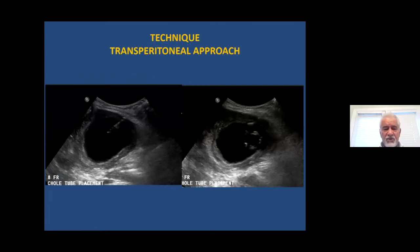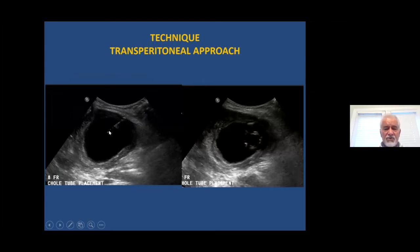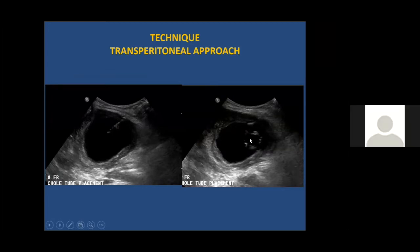Here is the transperitoneal approach without transhepatic access — a dilated gallbladder right next to the anterior abdominal wall. Under real-time ultrasound control, you can see the catheter going into the gallbladder using the trocar technique, and a loop has been formed in the gallbladder.